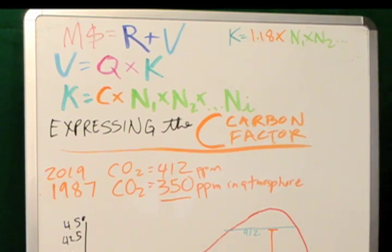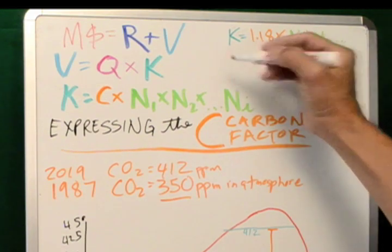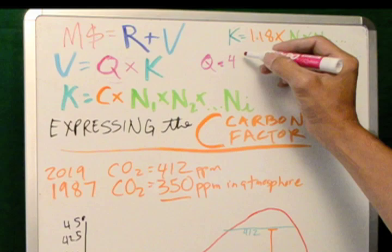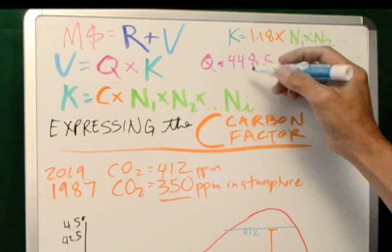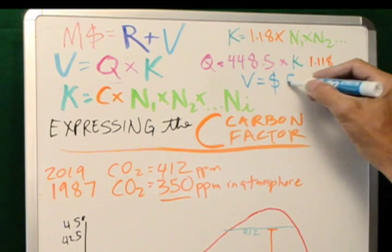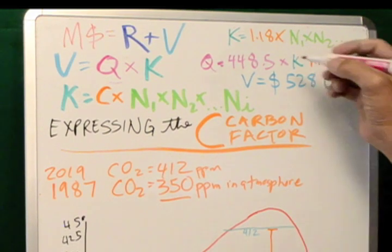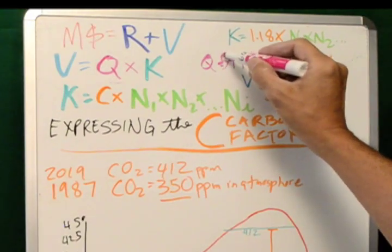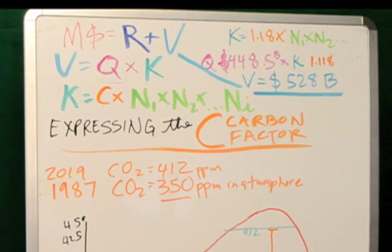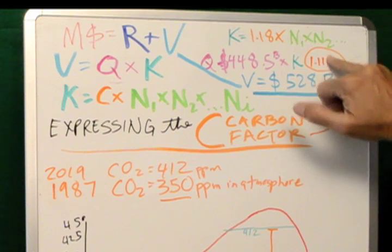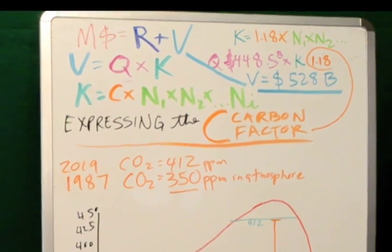So where we are now is when we divide the dividend of 412 with the 350 divisor, our quotient is 1.1771. For future reference, if the carbon in our atmosphere goes up to 415 parts per million, the quotient is 1.1857. Again, if the carbon increases to 425, the quotient goes up to 1.2143. So calculating impact factors at current levels, K equals 1.1857 and when we multiply that by the remaining factors of the Intemarate offsets, our current equation Q would equal 448.5 billion and when you multiply that with the 1.118, the value of our ecological assets is now at 528 billion.